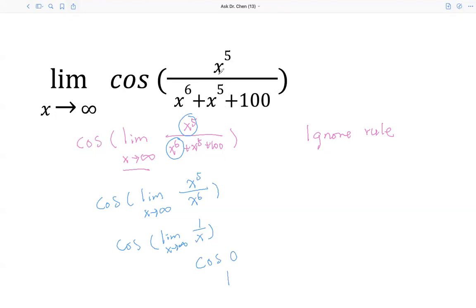So how do we think about this? What is the ignore rule? What's the mathematics principle behind it? We divide everything by x raised by 5. Then the numerator becomes 1.